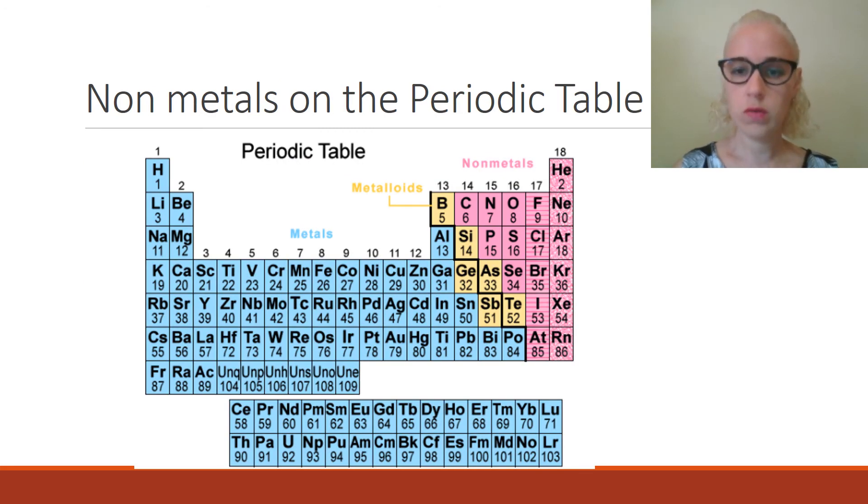Non-metals on the periodic table are found in this top right-hand corner, so these pink guys here, as well as hydrogen. As I said before, hydrogen breaks lots of rules. Some periodic tables will actually list hydrogen as sort of on its own in a little box there, because it doesn't really fit in any other spot, but it's definitely a non-metal. This group here is the noble gases, which is helium, neon, argon, krypton, xenon, and radon.